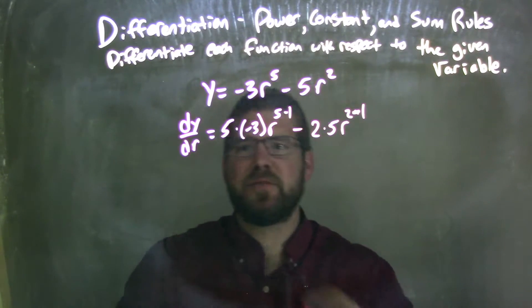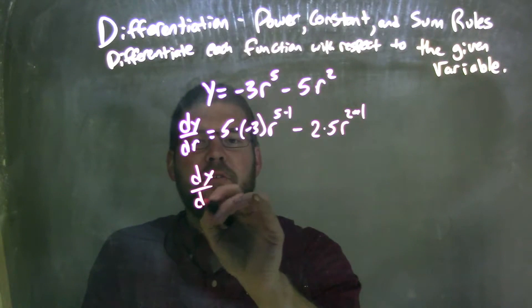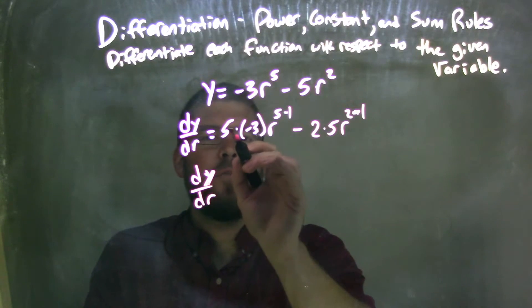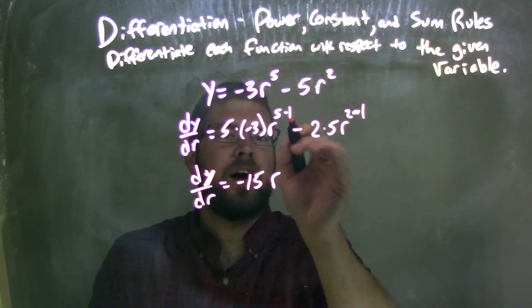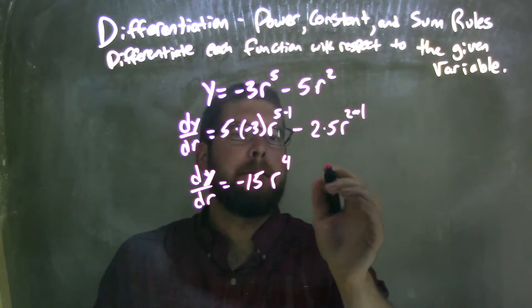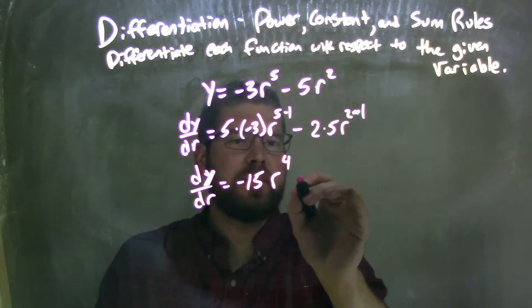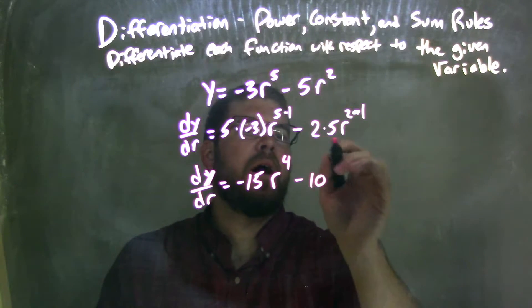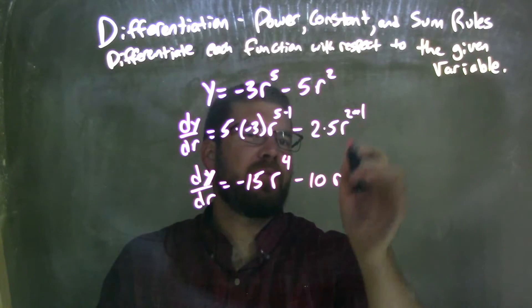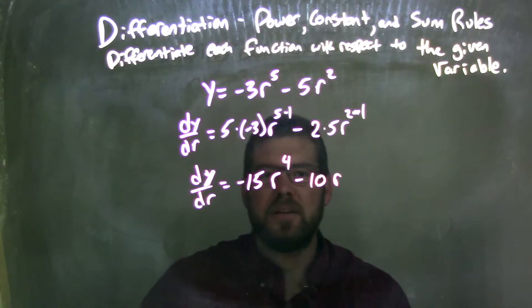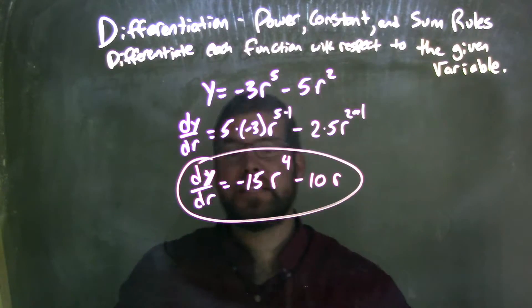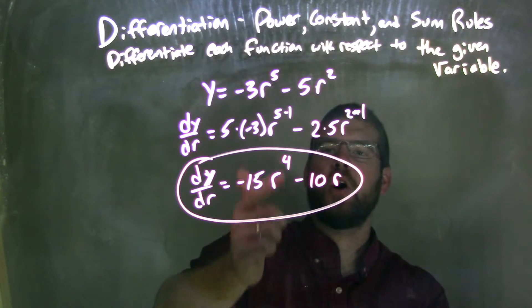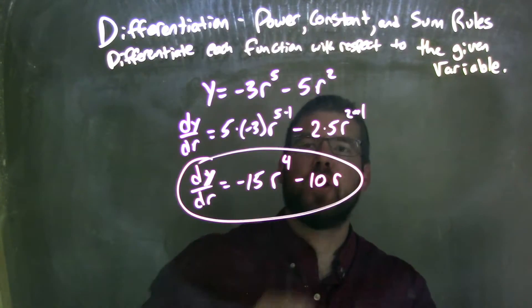Now we just simplify it. dy over dr: 5 times negative 3 is negative 15, so negative 15r to the 5 minus 1 power, which is 4, minus 2 times 5, which is 10, r to the 2 minus 1 power, which is just 1. And there we have it, our final answer: dy dr is equal to negative 15r to the fourth power minus 10r.